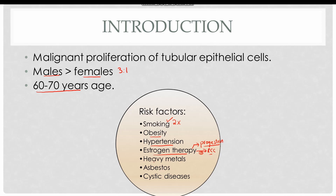Heavy metals such as lead and mercury toxicity, as well as asbestos, also increase the risk of renal cell carcinoma. Moreover, cystic diseases also increase the chances of renal cell carcinoma in certain cases.